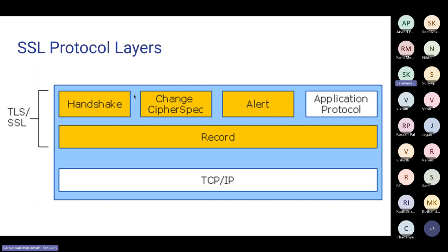At the SSL layer, there are basically two layers. The top layer contains sub-protocols: the Handshake sub-protocol manages the handshake; the ChangeCipherSpec sub-protocol signals that future messages will be encrypted; the Alert protocol communicates errors; and the Application Data protocol transfers the actual data. Below the sub-protocols is the Record Layer, which provides header information for TLS before data is passed to TCP in encrypted format.